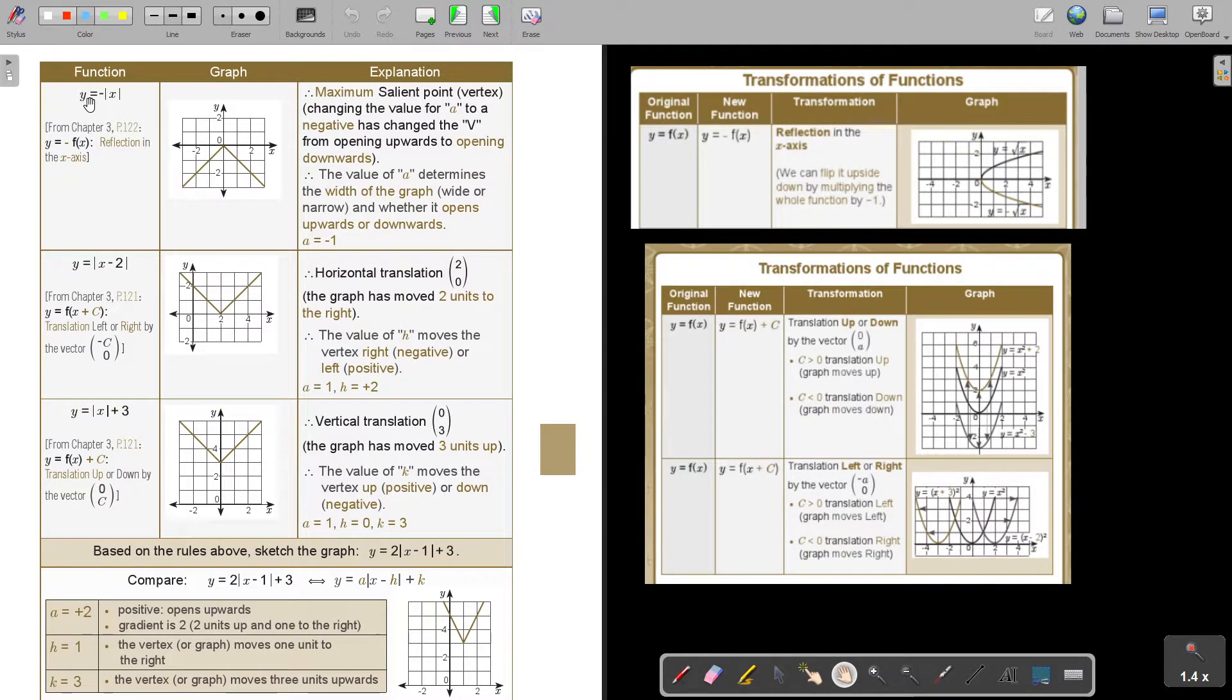What happens if there's a negative? Let's go back to our basic thing. If it's a negative, it's a reflection in the x-axis. So if this graph was like this, then it's a reflection in the x-axis. Changing A to a negative has changed the V-shape opening upwards to opening downwards.